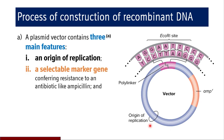The next feature is the selectable marker gene. This region of the plasmid, shown in orange color, is the selectable marker gene. Here it carries the gene responsible for ampicillin resistance, which is the selectable marker gene conferring resistance to an antibiotic like ampicillin.